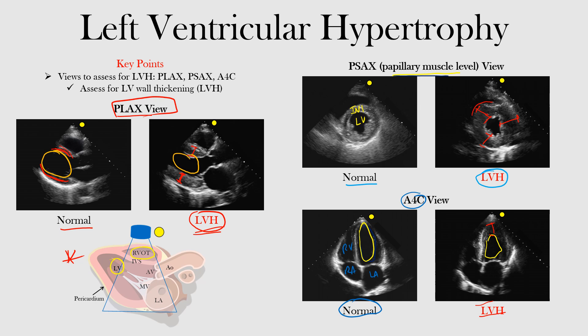We've gone through three different views. In the parasternal long axis view, notice the thickening of the left ventricular wall — here is the left atrium, the aortic valve, and the outflow tract — we're focusing on that LV cavity and the thickening of those walls. We saw the same thing in the parasternal short axis view and the apical four-chamber view. The wall is thickened, the cavity is getting smaller. The goal was to show you views to identify left ventricular hypertrophy at bedside, which can help our differential diagnosis — for example, a patient with bad hypertensive disease causing significant LVH.